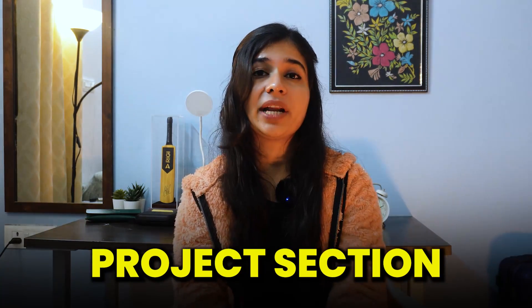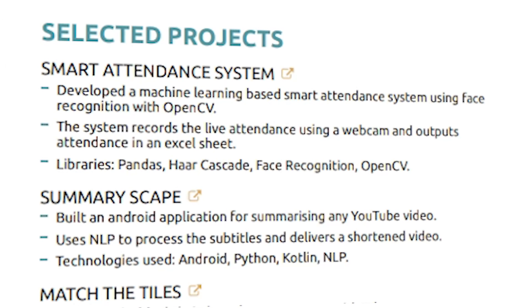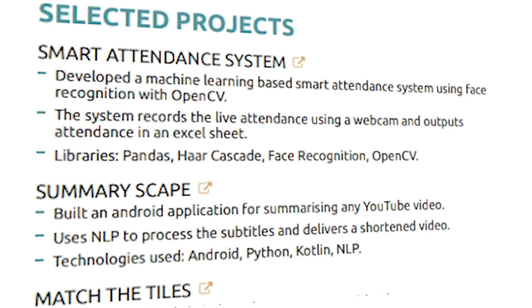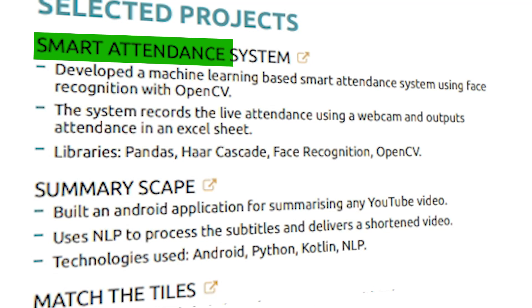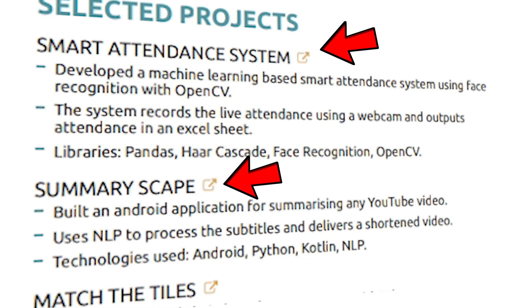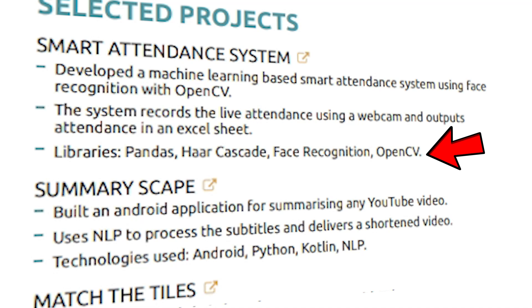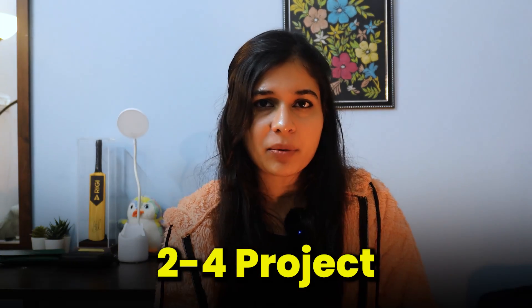Next is the Projects section. I have added the heading 'Selected Projects,' which implies there are other projects but these are the ones I selected for my resume. In every project, I have added the heading, its information, its URL, and in the last point I have written technologies and libraries used. I recommend having 2-4 projects and not exceeding beyond 4. Again, start with strong keywords like 'developed,' 'built,' etc., instead of writing complete sentences. Put the project you are most confident about at the top — one you can best explain in an interview. If you have only a few projects or no projects yet, let me know and I will make a separate video on the same.